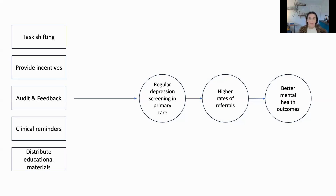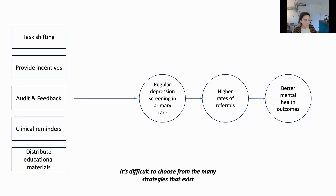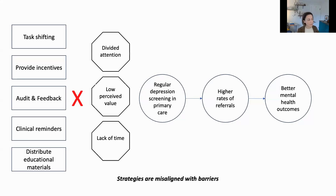We have several reasonable options from the long list of implementation strategies. We can think about task shifting, where rather than asking a physician to administer a depression screening, we might ask a medical assistant to administer it instead. We might provide clinical incentives, use audit and feedback where we give people feedback on their performance, or use clinical reminders or distribute educational materials. The question becomes, which of these strategies should we choose? We have lots of options and it's hard to know what's the right choice in a particular setting.